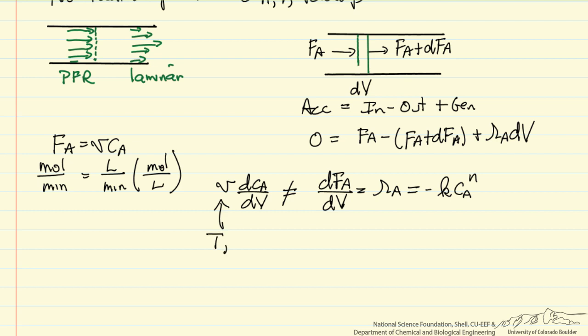We're not going to do this because the volumetric flow rate changes. It changes because the temperature changes, because the pressure changes, and because the moles change. Namely if A in the gas phase reacts to form two moles of B in the gas phase, we increase the number of moles. This changes the time in the reactor.